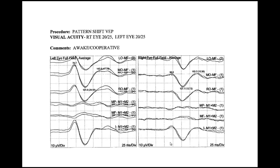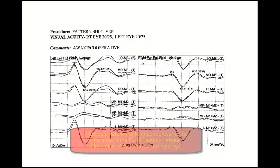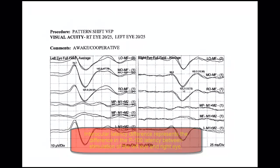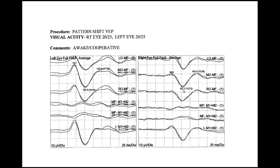In this patient, P100 on left eye stimulation has a latency of 101.9 ms, but with right eye stimulation it is 127.7 ms. In our lab, if the interocular latency difference is more than 6 ms, we consider it abnormal. Since the delay is only with right eye stimulation, not with left eye stimulation, this is suggestive of a lesion anterior to the chiasm on the right — and in the right clinical context, this may be consistent with a right optic neuritis.